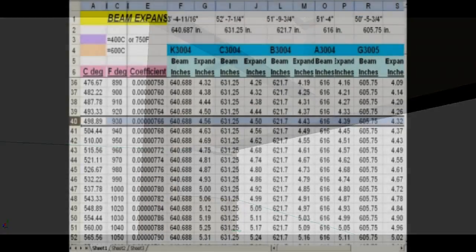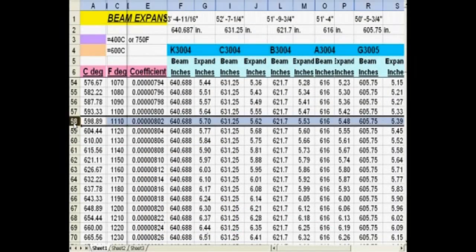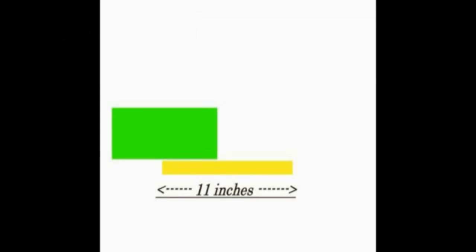Having put the figures that NIST used into a spreadsheet, we found that the maximum expansion that could be experienced by any of these beams at 600 degrees Celsius would be 5.77 inches beyond its 5.5 inch midpoint on an 11 inch seat.